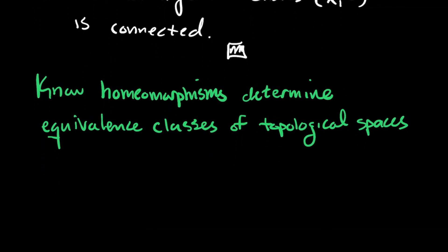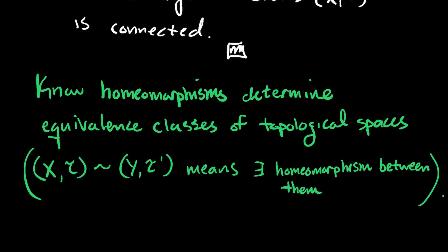We know that homeomorphisms, they determine equivalence classes of topological spaces. So remember, an equivalence class, that was the result of an equivalence relation where you had reflexive, symmetric, and transitive. So what we're saying is we're finding these little bins that we're going to put similar topological spaces in. And what do we mean by similar or equivalent? So if two spaces are equivalent, that means that there exists a homeomorphism between them.